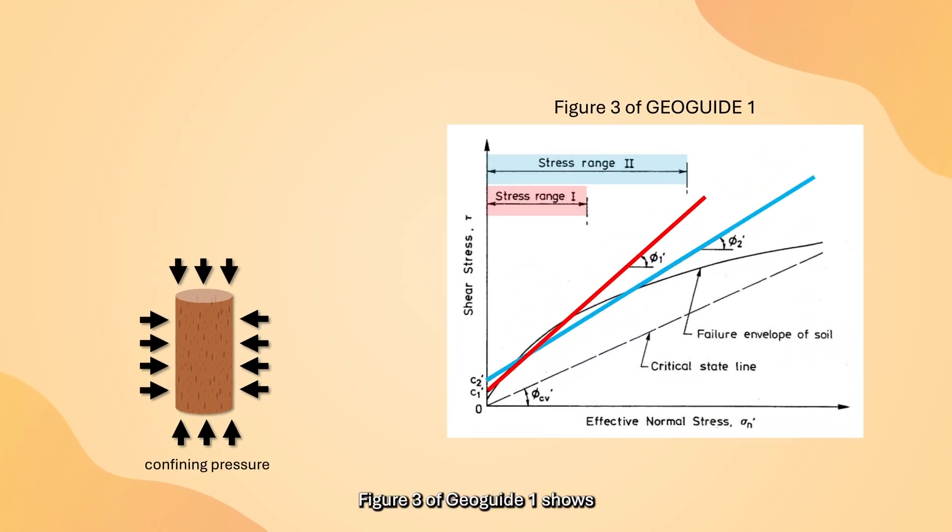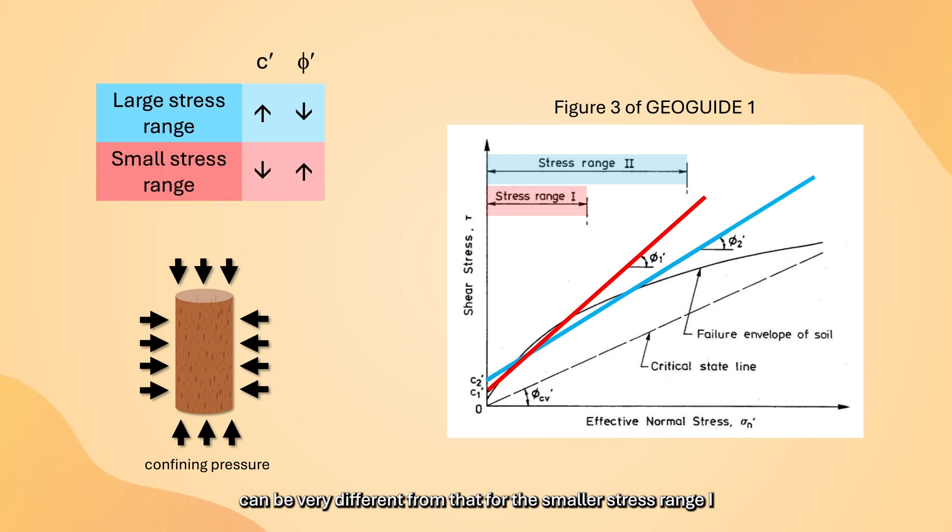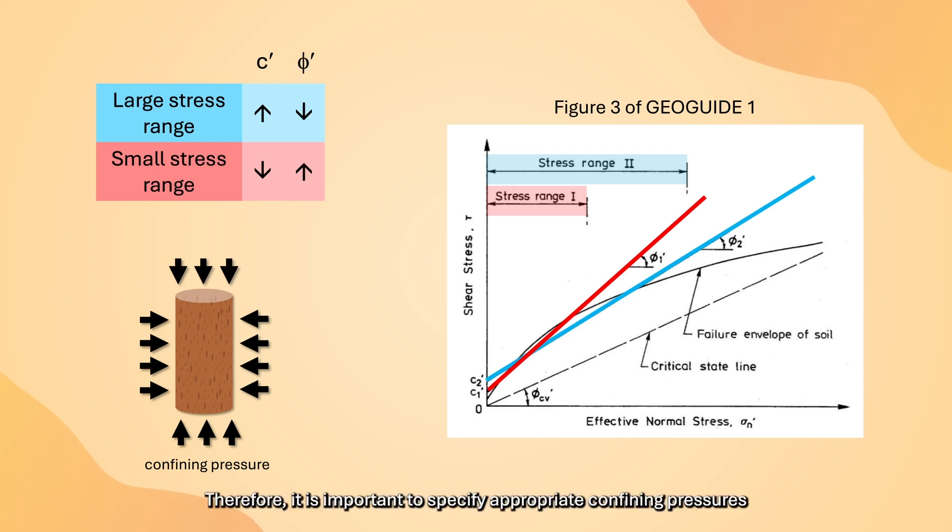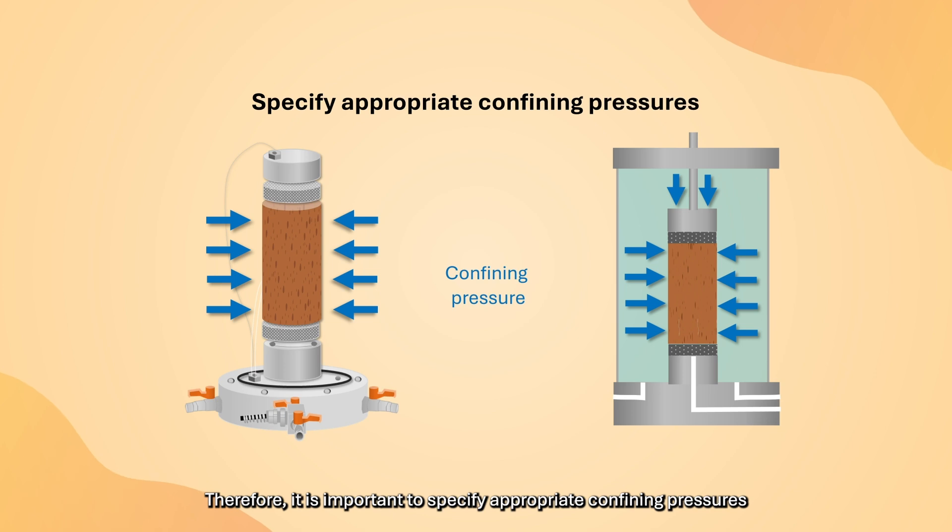Figure 3 of GeoGuide 1 shows the actual Mohr-Coulomb failure envelope under different stress ranges. As you can see, the best fit line for the failure envelope for the larger range 2 can be very different from that for the small stress range 1. The latter has a smaller apparent cohesion but a larger angle of shear resistance. Therefore, it is important to specify appropriate confining pressures.